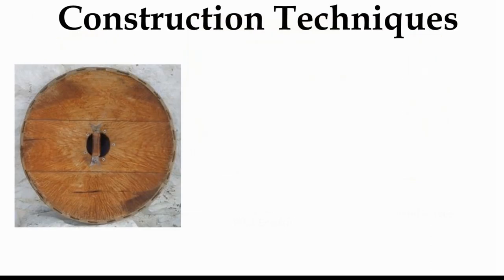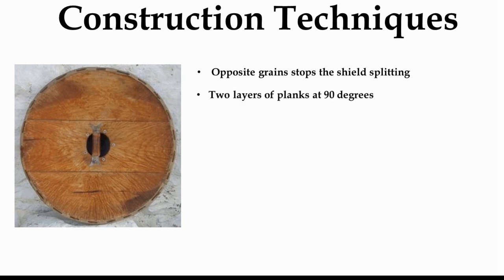Once they'd felled the trees, the Anglo-Saxons employed a couple of different construction techniques. One was to use opposite grain in the wood, which helps the shield become stronger — if the grain all runs in the same direction, it's easier to split the shield, and a split shield is useless. Another technique was to use two layers of planks placed at 90 degrees to each other, again to stop the wood from splitting.